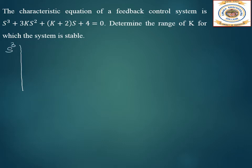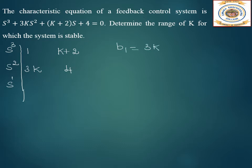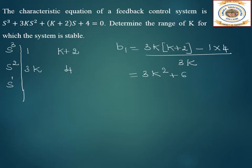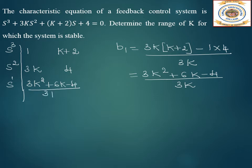Constructing the Routh array: for s³, the coefficient is 1 and the odd-power coefficient is (k+2). For s², the coefficient is 3k and s⁰ is 4. For s¹: b1 = (3k(k+2) − 1×4) / 3k = (3k² + 6k − 4) / 3k. For s⁰, we get 4.